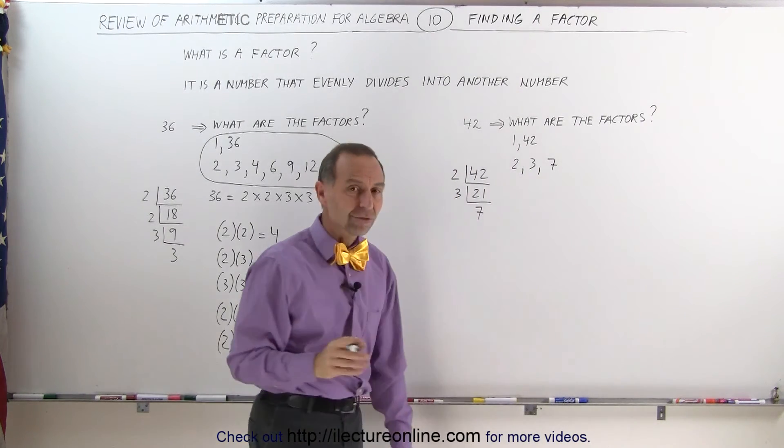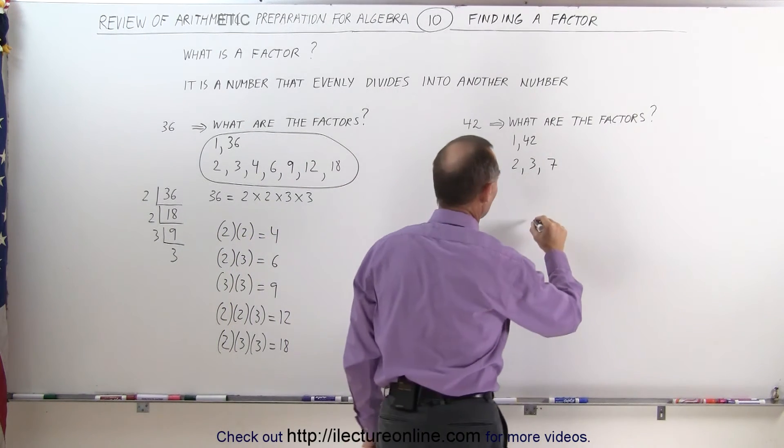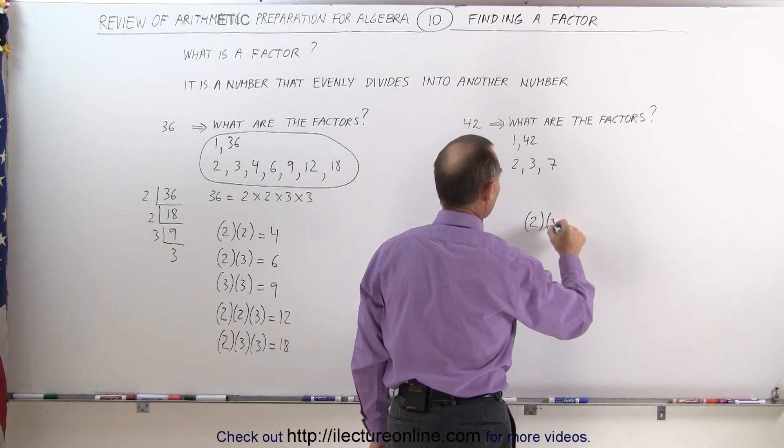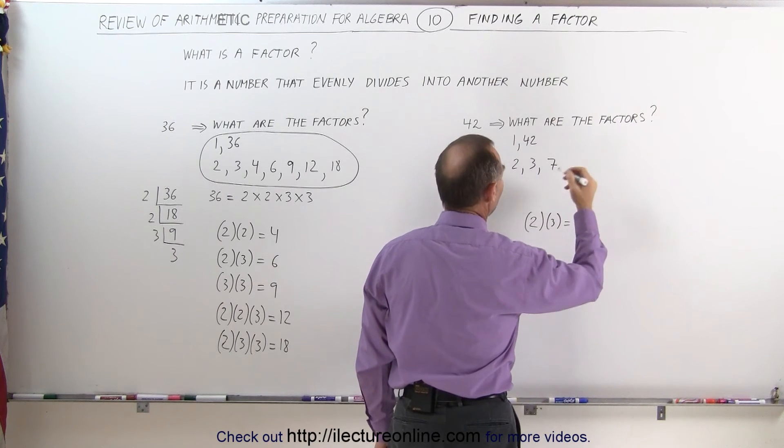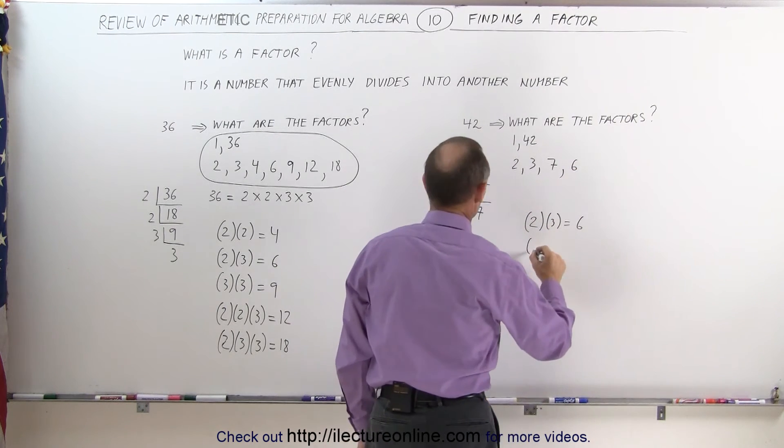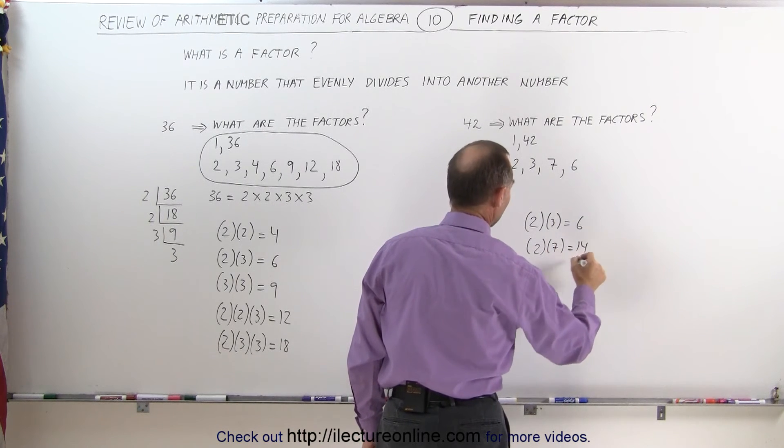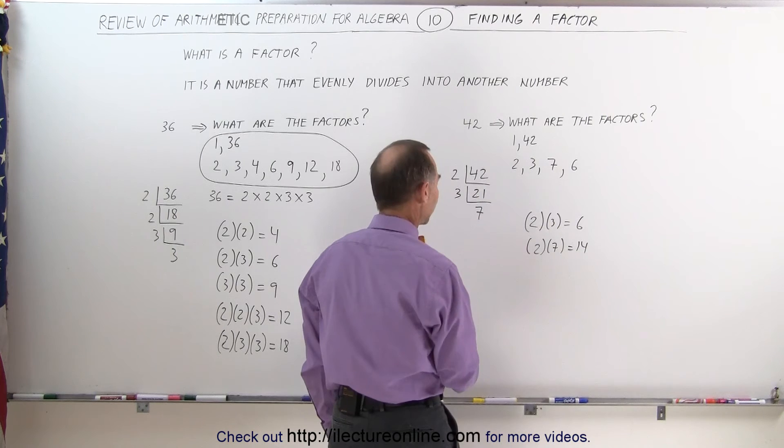Now we can try to find any of the other combinations by multiplying these factors together. In other words, 2 times 3 gives me 6, and that is also a factor. 2 times 7 is 14. It's also one of the factors.